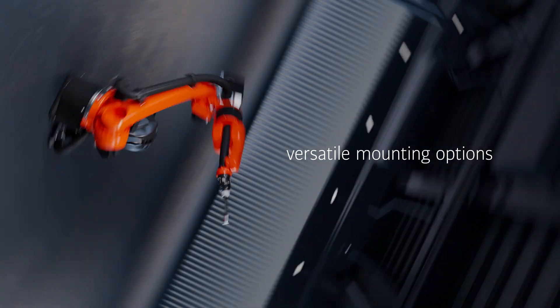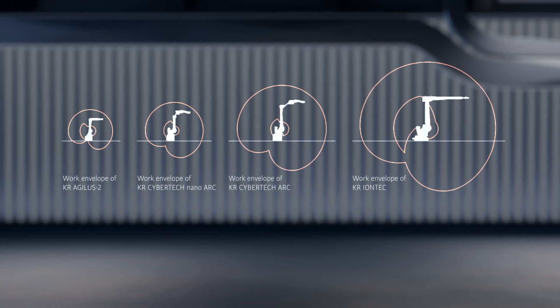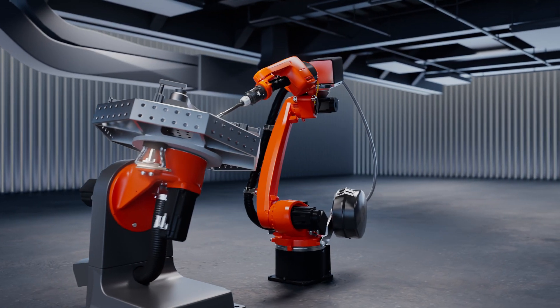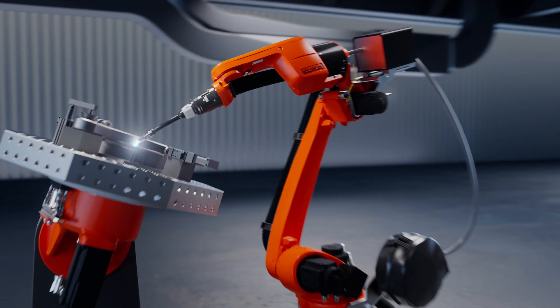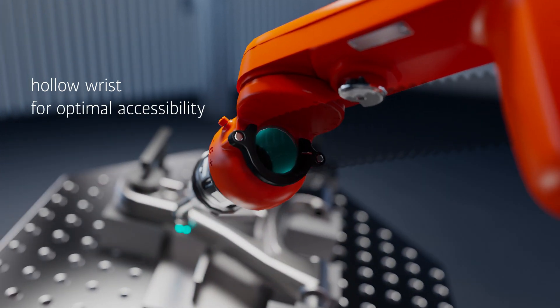Our robots boast versatile mounting options, competitive reach advantages from 700 millimeters to 3100 millimeters, and a dedicated ARC welding robot, the KR Cybertek ARC, with hollow wrist for optimal accessibility and reduced wear of the hose bundle.